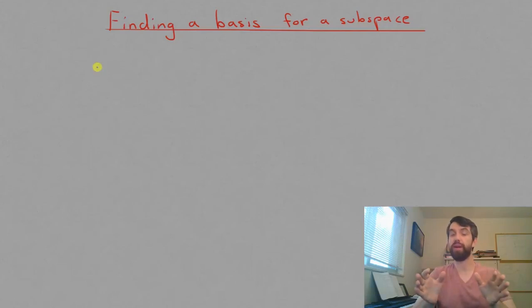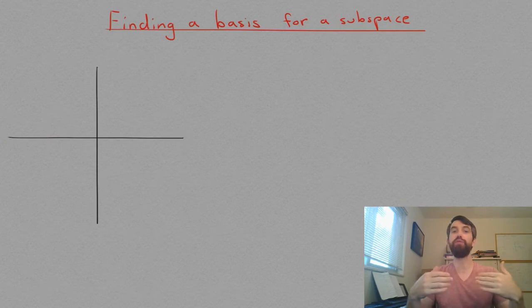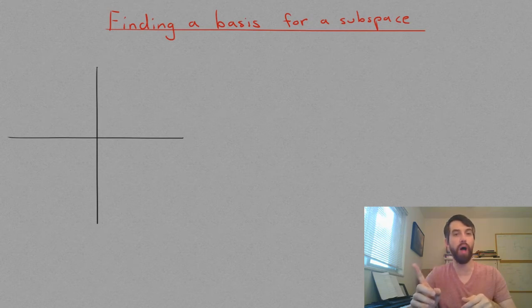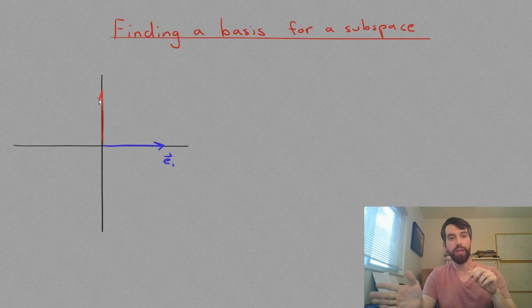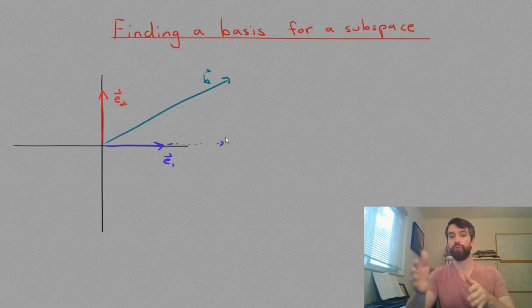Suppose we have a subspace, and I'm going to use R² as an example in this video. We've seen before that R² can be written as the span of what we've previously called, although we didn't justify at the time why, the standard basis vectors, the E1 and the E2. This meant that by taking linear combinations of the E1 and the E2 that we were able to reach any vector in R².